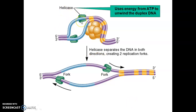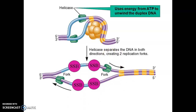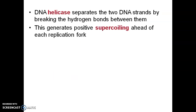Helicase uses ATP to break the hydrogen bonds of the double helix. Helicase separates the DNA in both directions, creating two replication forks — each of Y-shape. Single-stranded binding proteins then come and bind with the single-stranded regions of the exposed DNA double helix to stabilize them.